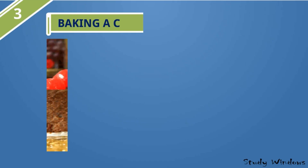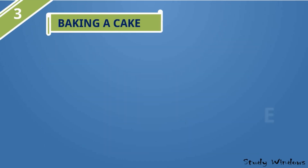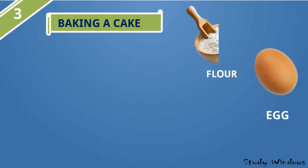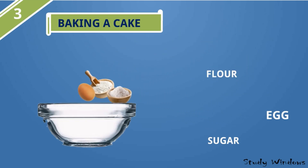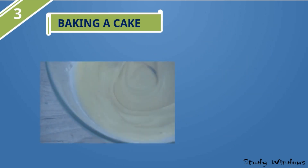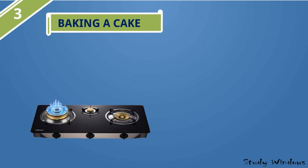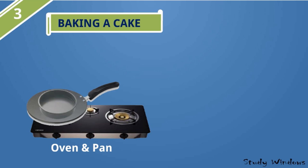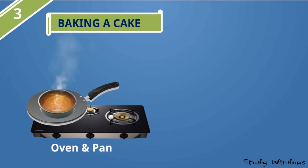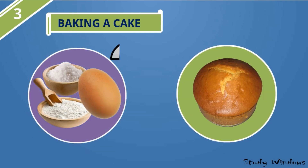Baking a cake. Take an egg, some flour, and some amount of sugar. Mix them in a bowl, stir and mix well to make a batter. Now take a container, keep the batter in the container, and gradually we will see the batter has changed into a nice cake.